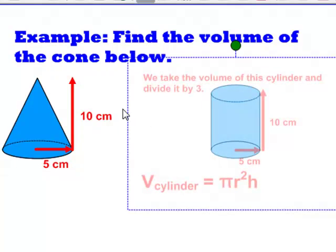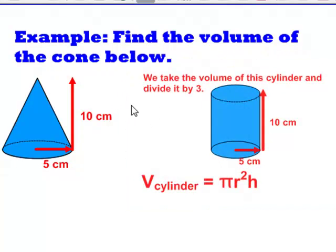Here we have a cylinder with the same radius and the same height, so we know that this cone would fit directly in it. We also know that if we take the volume of this cylinder and divide it by 3, we'll end up with the volume of the cone.